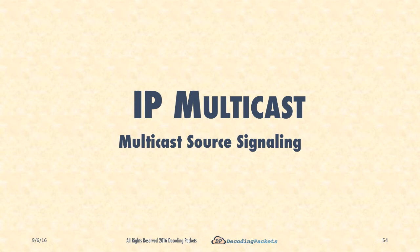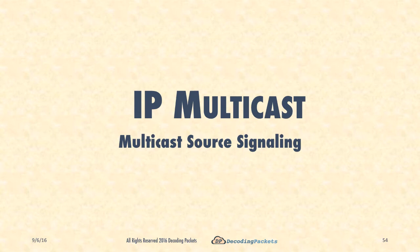The next topic is multicast source signaling. We talked about how receivers signal their intent to receive certain traffic. Now the multicast source that is sending that traffic also has to make the multicast network aware of its intent to actually send traffic to multicast groups.